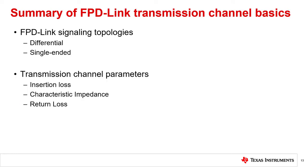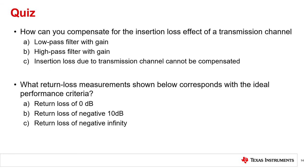To summarize, in this lesson we covered some of the basics of FPD-Link transmission channels, and we studied different signaling topologies supported by FPD-Link devices. We also looked at some of the key transmission parameters, including insertion loss, return loss, and characteristic impedance. Now it's time for a quick quiz to test your knowledge on the high-speed concepts we discussed throughout this module.